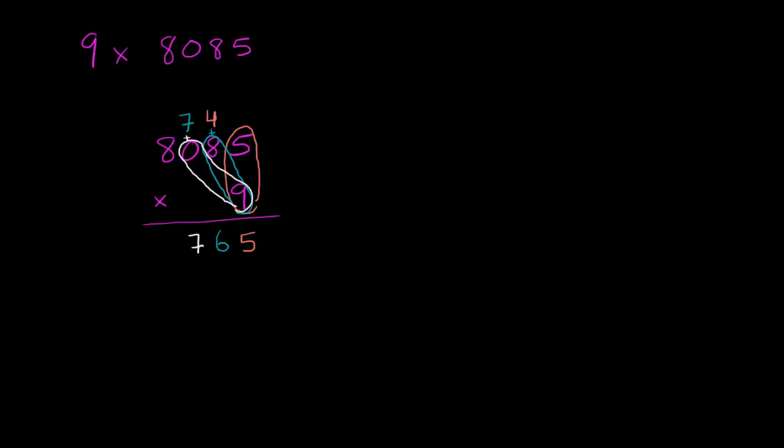And then finally, we have 9 times 8. This is the last thing we have to compute. We already know that 9 times 8 is 72, and we just write the 72 right down here. And we're done.